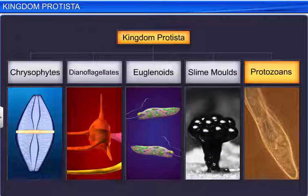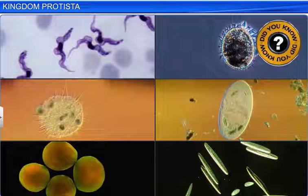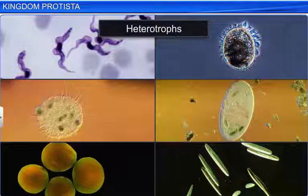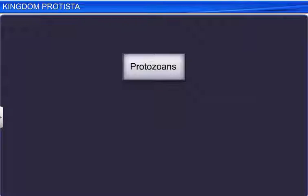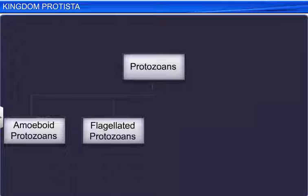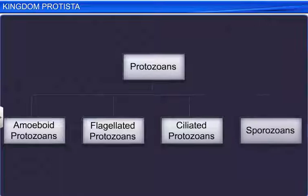Protozoans are protists that are believed to be primitive relatives of animals. Did you know that the word 'protozoans' means 'the first animals'? All protozoans are heterotrophs and live as predators or parasites. They can be classified into four types: amoeboid protozoans, flagellated protozoans, ciliated protozoans, and sporozoans.